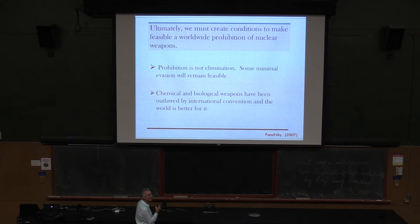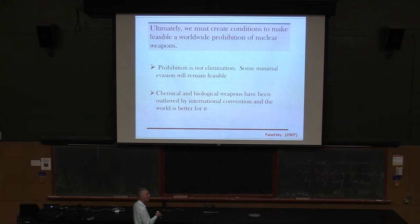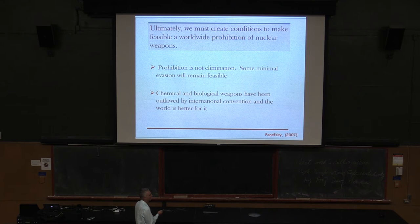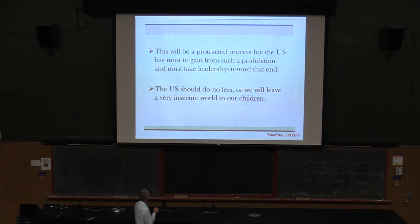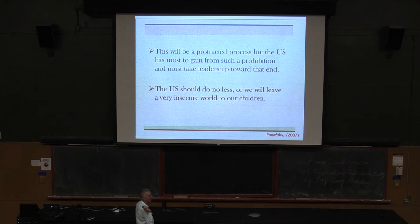I'm ending with Panofsky's ending — how he ended his talk on nuclear weapons. He was in favor of a prohibition on nuclear weapons in the world, just like there is on chemical and biological weapons. He even states prohibition is not elimination — chemical weapons have been prohibited but still used. He strongly believed we should have an international prohibition. He said: 'This will be a protracted process, but the U.S. has most to gain from such a prohibition and must take leadership towards that end. The U.S. should do no less or we will leave a very insecure world to our children.' My very last slide: deep down in my heart, the reason I'm doing this is to keep my little 17-kilogram human safe in New York City. That's my talk. Thank you.